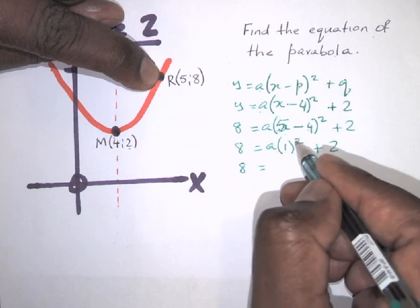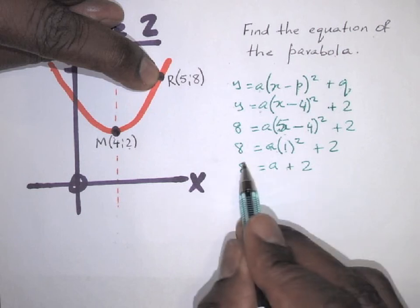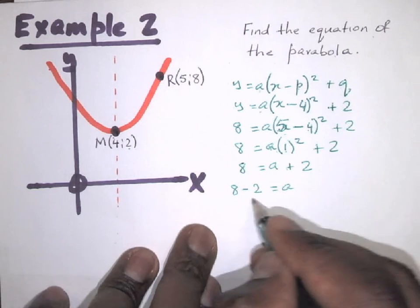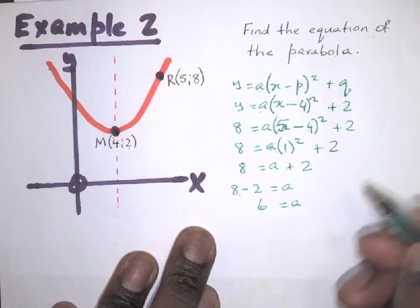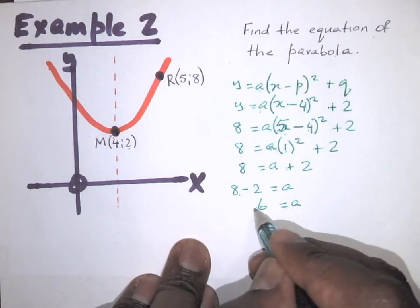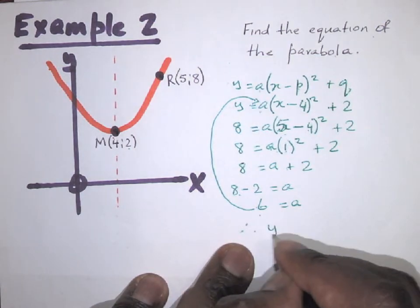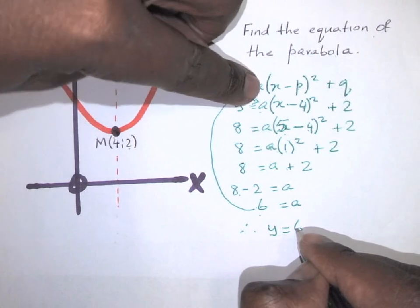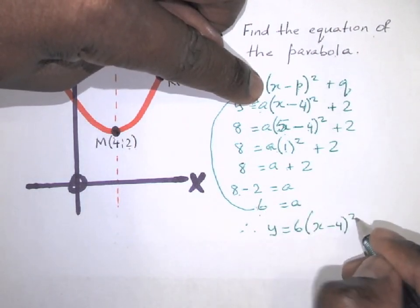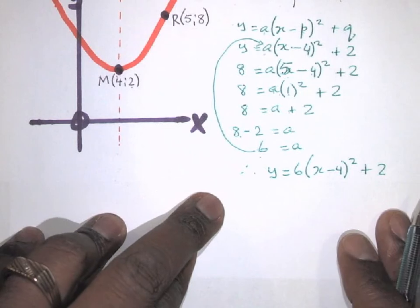So 8 = a(1)² + 2, which means 8 = a + 2. Taking 2 to the other side: a = 8 − 2 = 6. Now I plug a = 6 back into the equation. Therefore the equation is y = 6(x + 4)² + 2. You can remove the brackets if required.